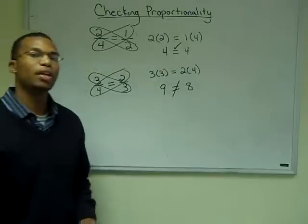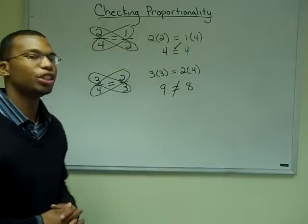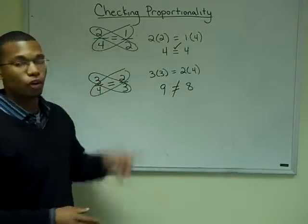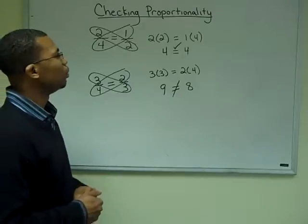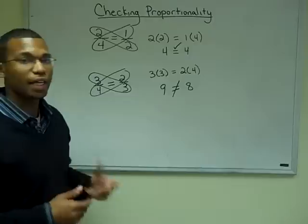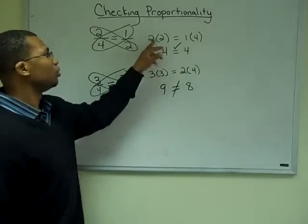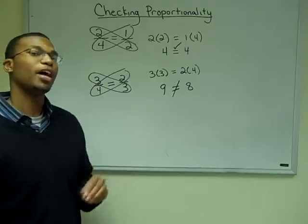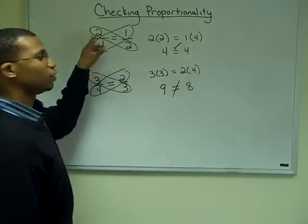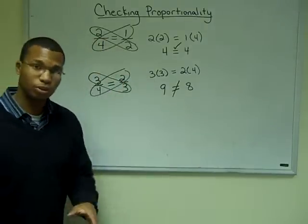Say, for example, we are checking the proportionality of the fractions two-fourths and one-half. By using cross multiplication, by multiplying the diagonals, we can see that two times two is four, and one times four is four. So in fact, the proportions of two-fourths and one-half are equal to each other.